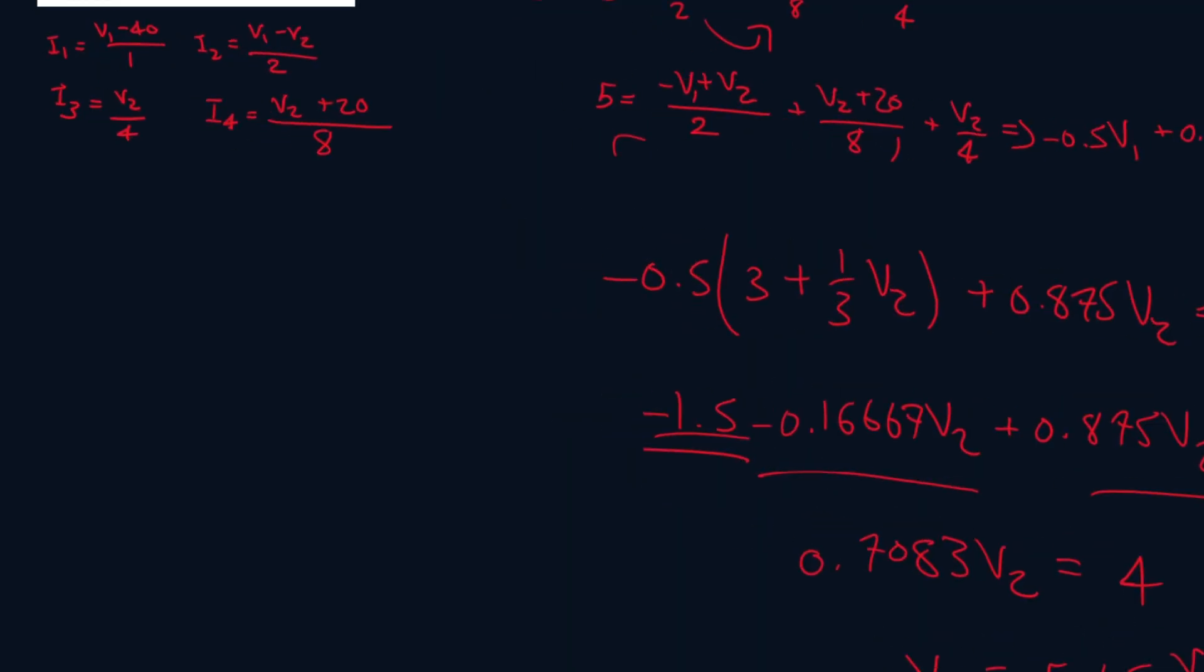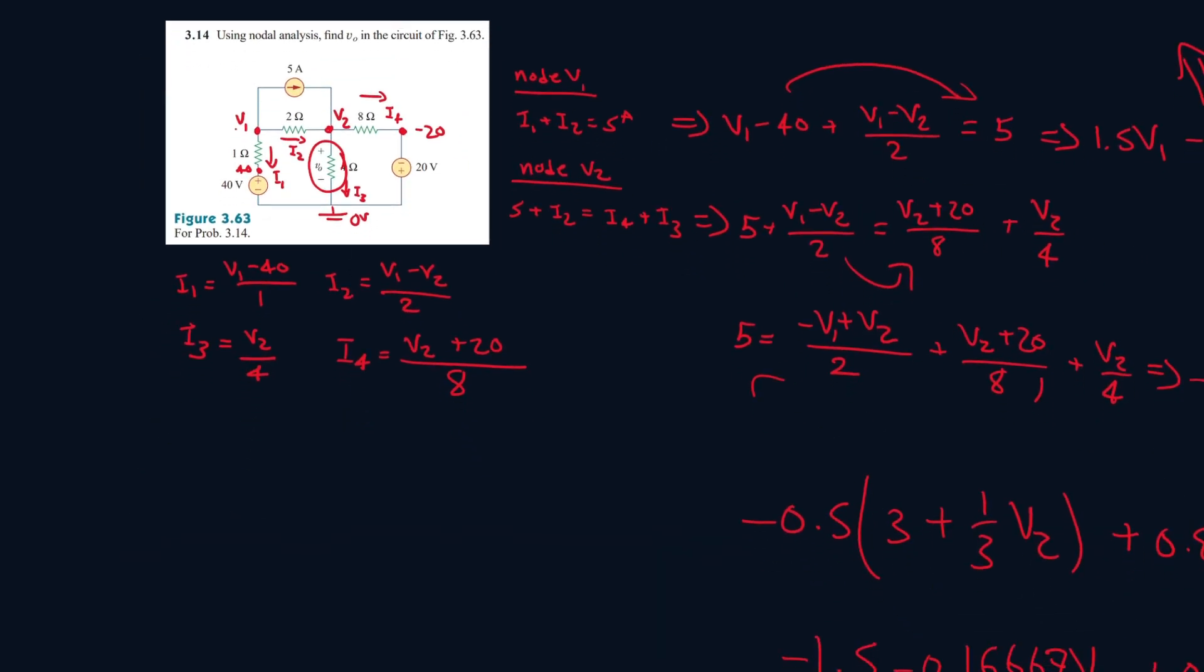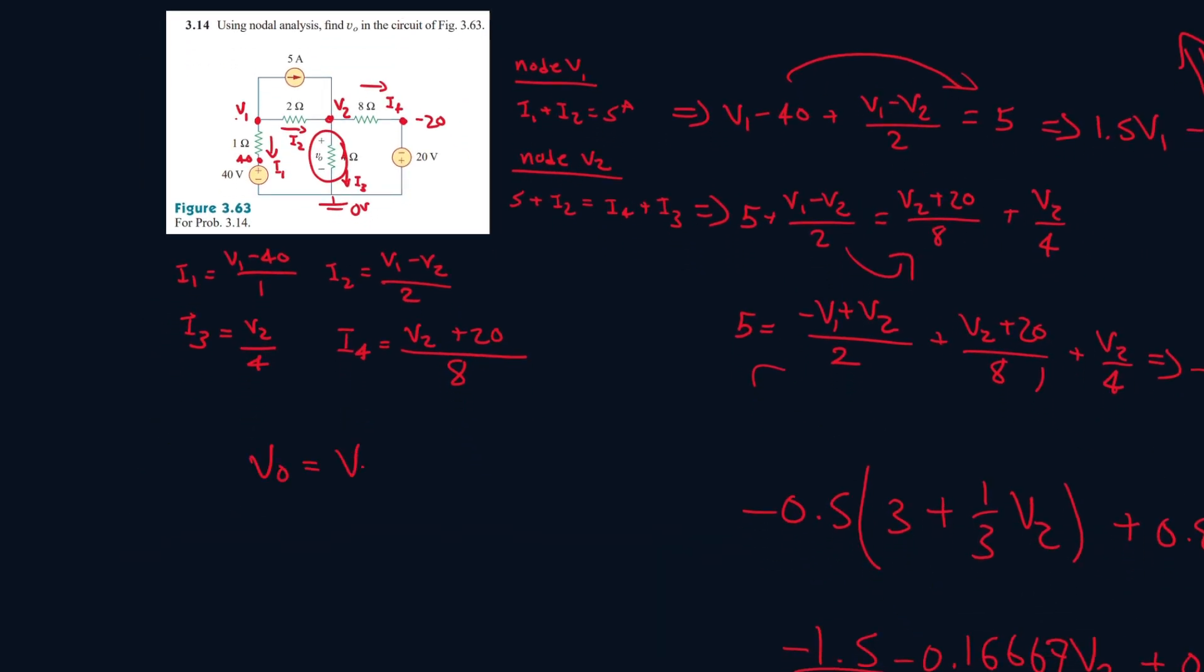And this is actually our V0 value because notice here, let's pay attention here, V2, as it goes down the circuit, it turns into 0 volts because it experiences a voltage drop. So this voltage drop has to be equivalent to V2 for it to equal 0 at the end. So V0 is equal to V2, and that's equal to 5.65 volts.